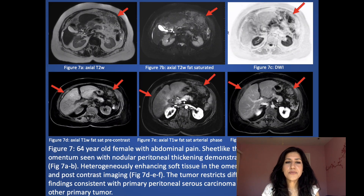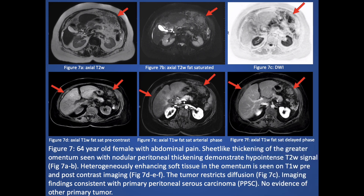Here is a 64-year-old female with abdominal pain. Using arrows to help identify the findings: there is sheet-like thickening of the greater omentum with nodular peritoneal thickening. There is heterogeneously enhancing soft tissue on the dynamic post-contrast images. The tumor also restricts diffusion on the DWI sequence. These findings are consistent with primary peritoneal serous carcinoma, with no evidence of another primary tumor.